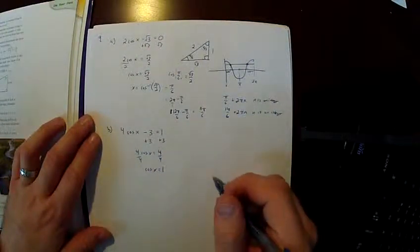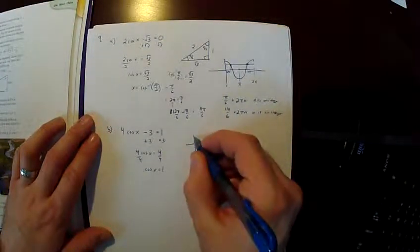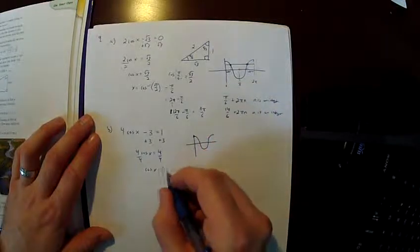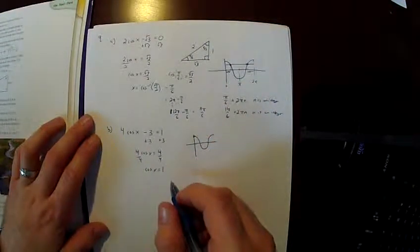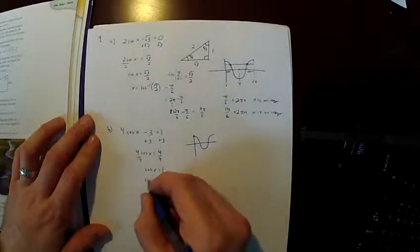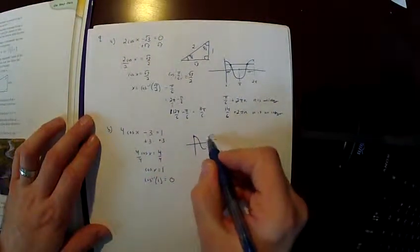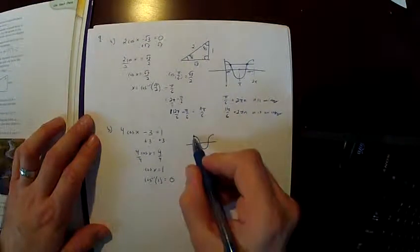If I'm thinking about it in terms of the circle, the cosine function doing this in a full cycle is equal to 1 at the very top. So I do know that one of my solutions is going to be 0. You could have also found that knowing that the inverse cosine of 1, if you put that into your calculator, would give you 0. But I think it helps to reference the wave in the circle.